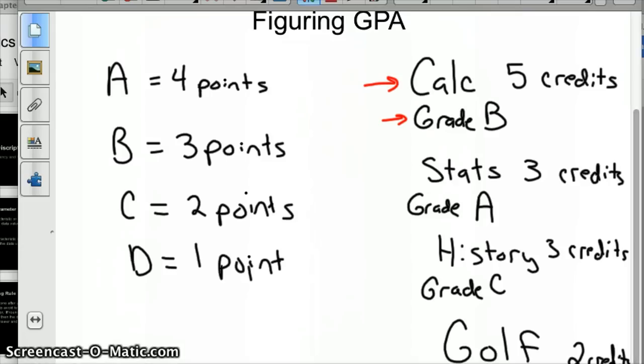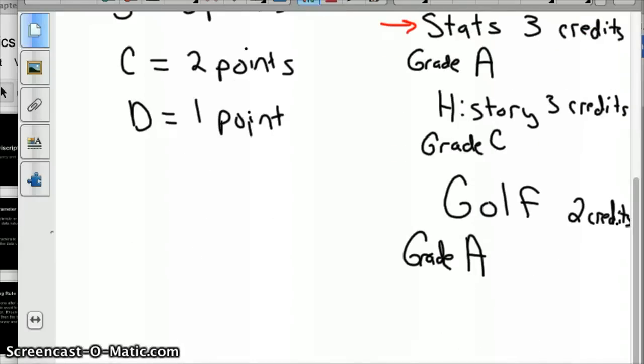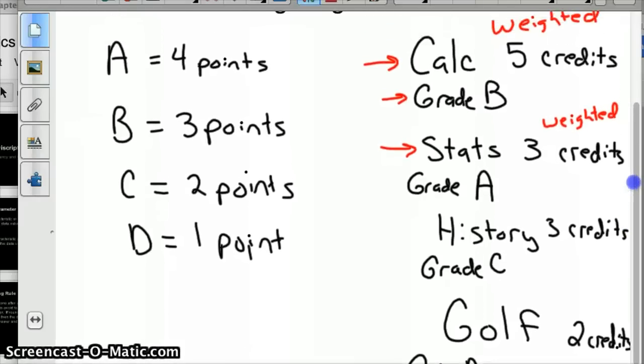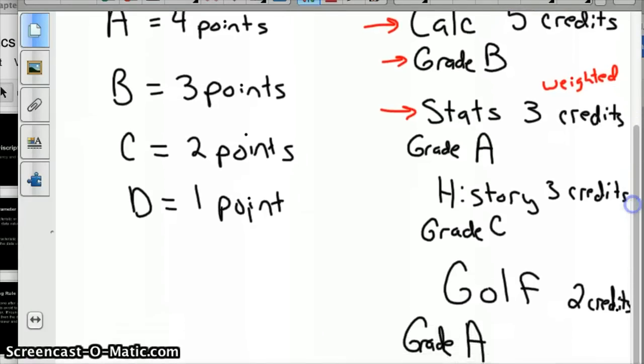You took statistics, a 3 credit class, weighted three times because it meets three times a week. You got an A in it because you had a great teacher like me. History, 3 credits, you got a C. Then you took a required PE class, golf, worth 2 credits, and you got an A. To figure a weighted average of this, take your weight times what it's worth. For that 5 credit calculus course you got a B in, that's 5 × 3 for the B, plus the stats class weighted 3 times with an A, that's × 4, plus the history class weighted 3 times with a C, that's × 2, plus golf weighted twice with an A, that's × 4.